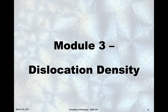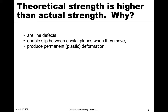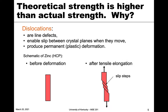We're going to start this chapter by looking at dislocations and specifically the amount of dislocations. So theoretical strength — if we calculate how strong a material should be, such as a metal, we find that theoretical strengths are actually higher than the actual observed strength. The question is why, and the answer is dislocations.